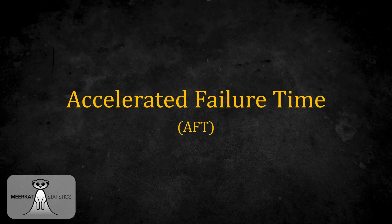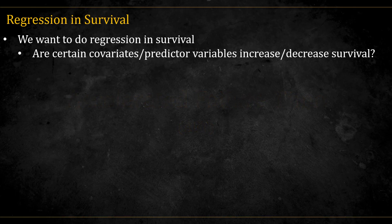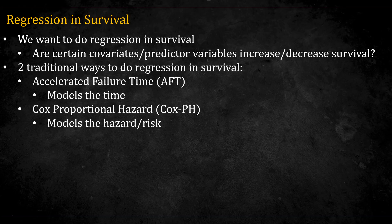In this video, we are going to talk about accelerated failure time models in survival analysis. We want to do regression in survival, meaning we want to know are certain covariates or predictors increase or decrease the survival. There are two traditional ways to do this, either AFT, which models the time directly, or Cox proportional hazard, which models the hazard or the risk function.